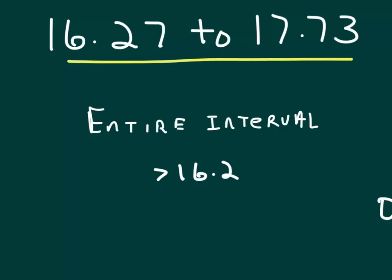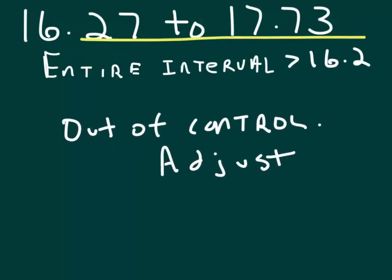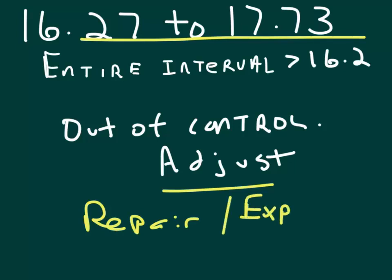The entire interval is greater than 16.2, therefore we will conclude that we are out of control, that we can either adjust or repair the machine or do some experimentation to see if we can do some improvements to the machine.